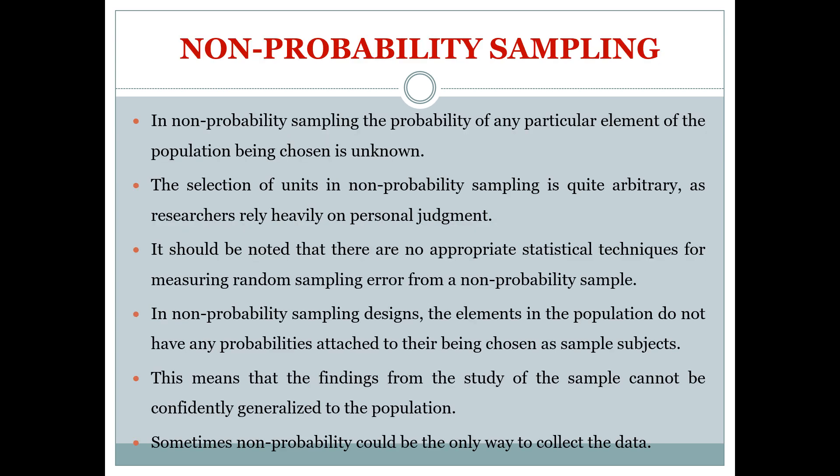In non-probability sampling, the probability of any particular element of the population being chosen is unknown. The selection of units in non-probability sampling is quite arbitrary, as the researcher relies heavily on personal judgment. There is no equal chance of selection, there can be a lot of biasness, and there are no appropriate statistical techniques for measuring sampling errors from a non-probability sample.